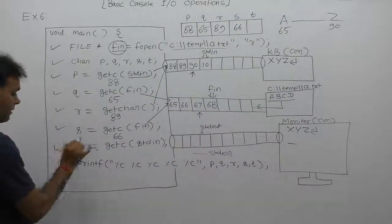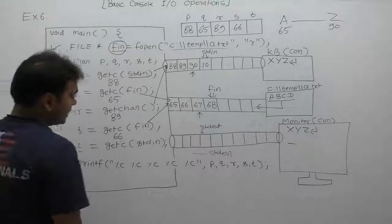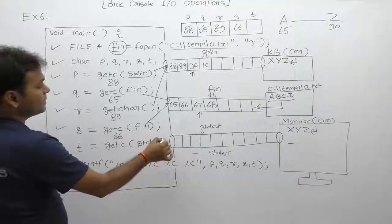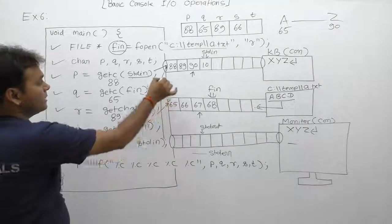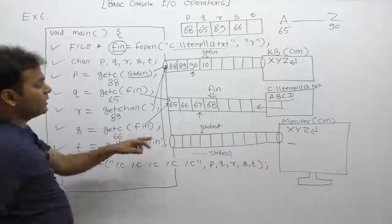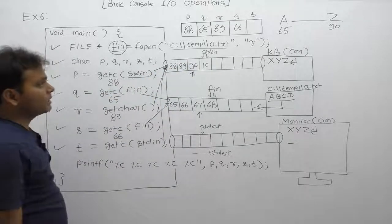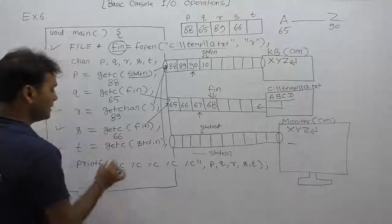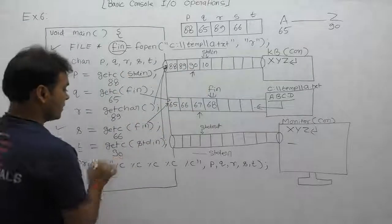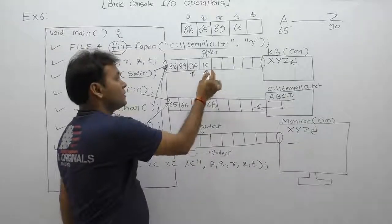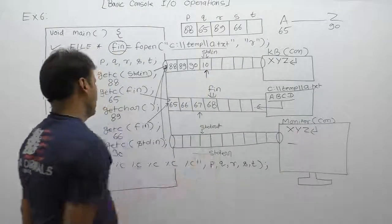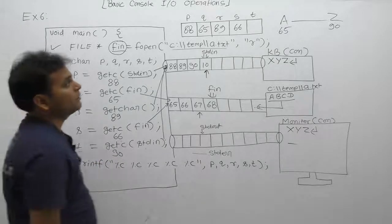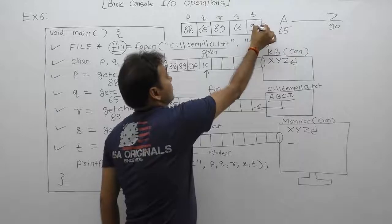Next, last case: t equals to getc again. Data from stdin by using getc function. getc function, next time data when stdin read, means again we are reading data from console device keyboard. Keyboard currently buffer stdin has, current place 90. Return 90. After 90 read, cursor moves to next byte, means 10. Therefore 90 is assigned to the variable t. Value of t becomes 90.